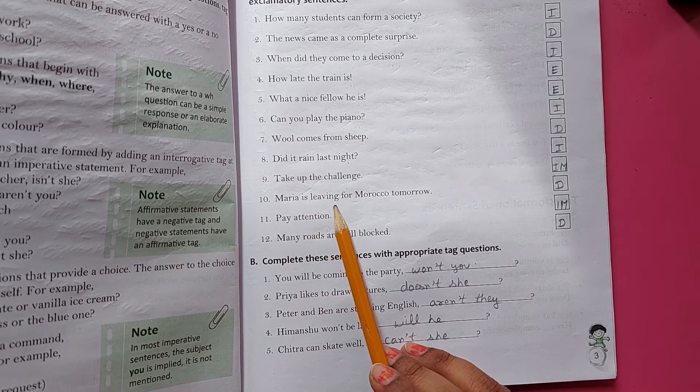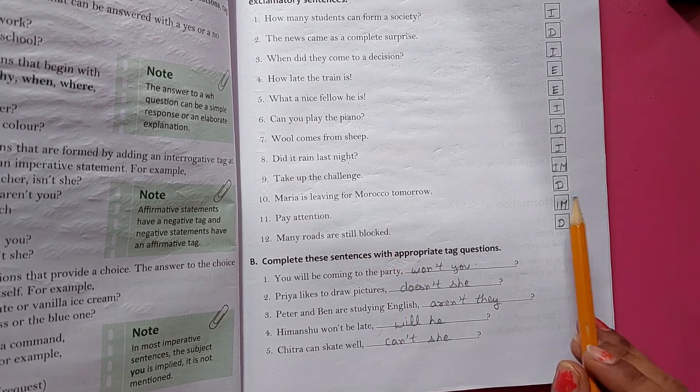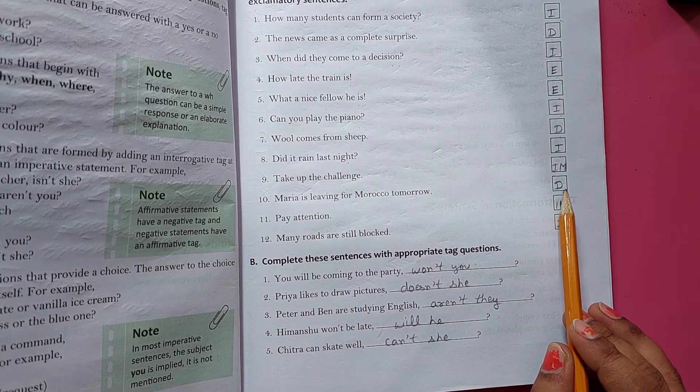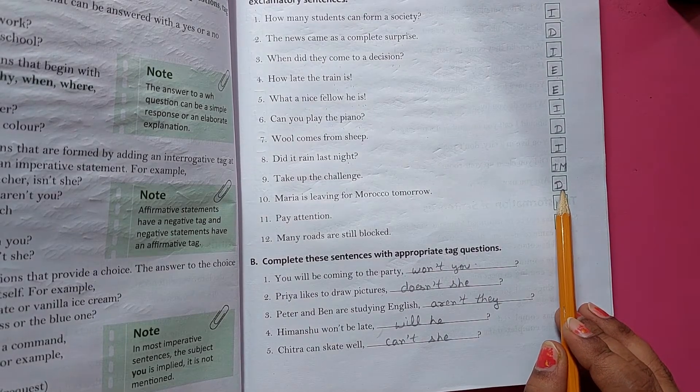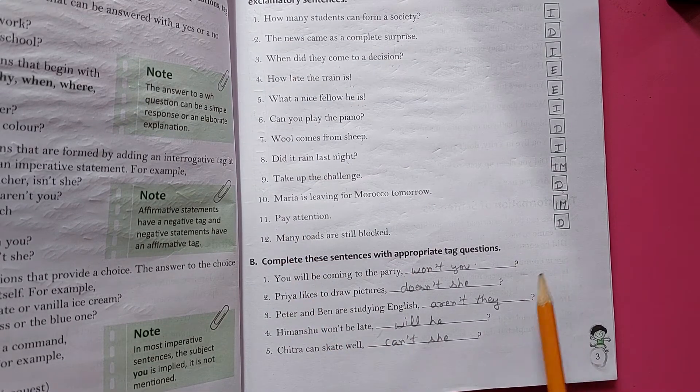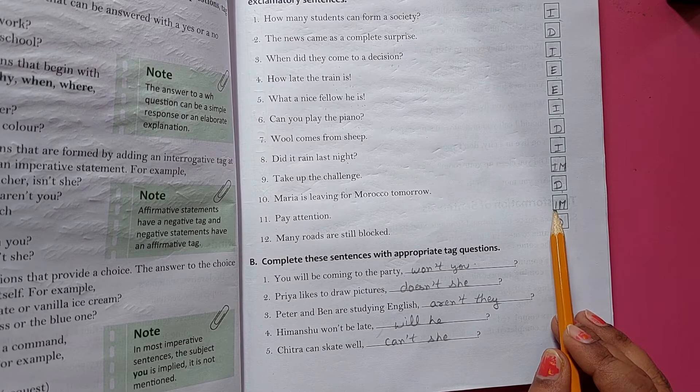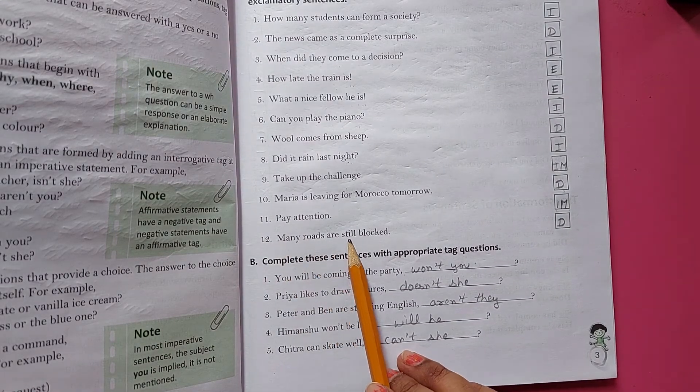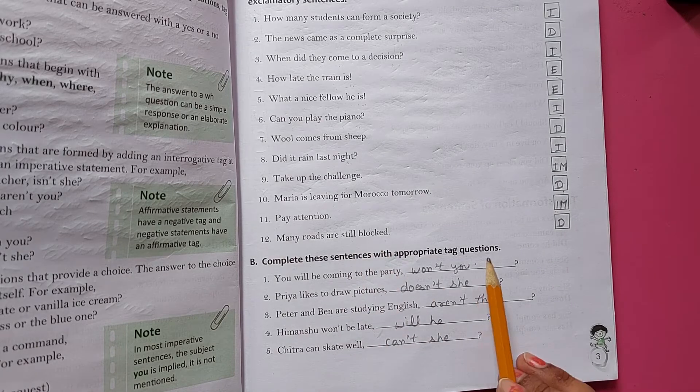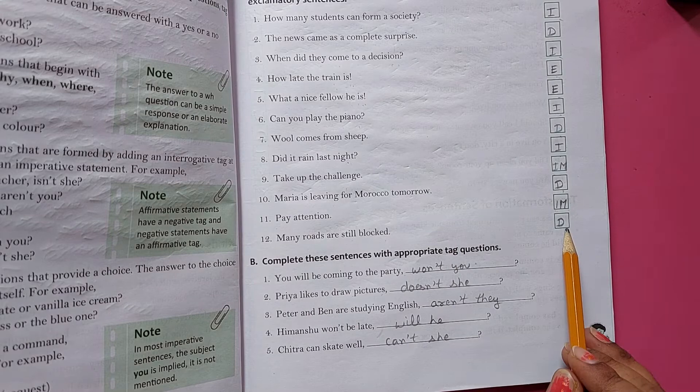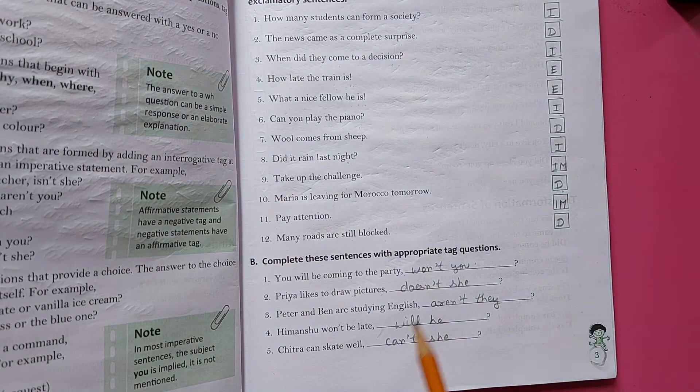Mariya is living for Morocco tomorrow. Mariya jo woh jari hai Morocco mein, toh yeh hummara declarative. Pay attention. Isme command ki jari hai ki attention karo. Yeh kya aagya hummara imperative sentence. Many roads are still blocked. Jo roads hai woh still blocked ho rahe hain. Yeh kya aagya hummara? Declarative.